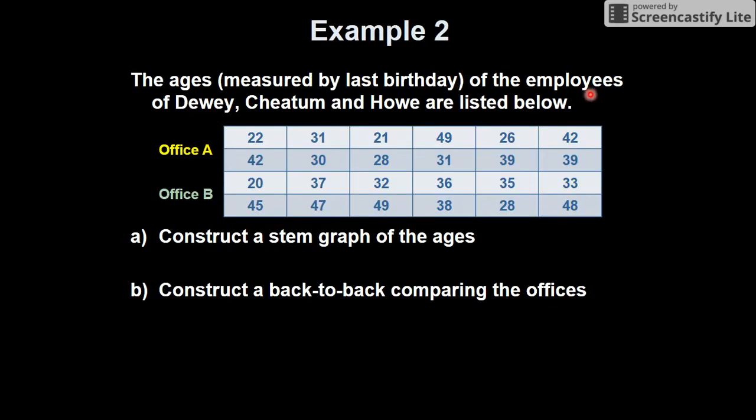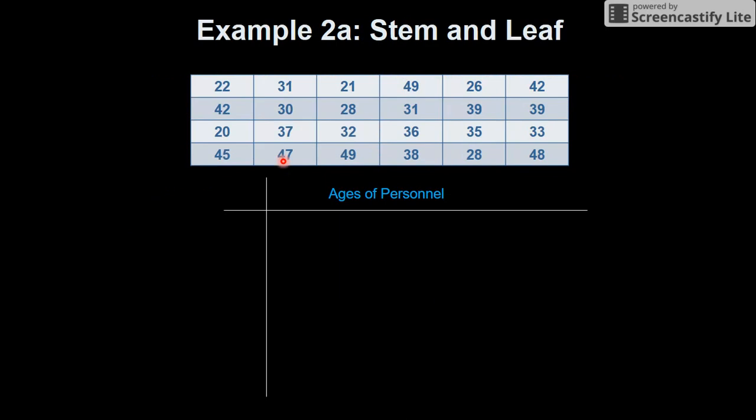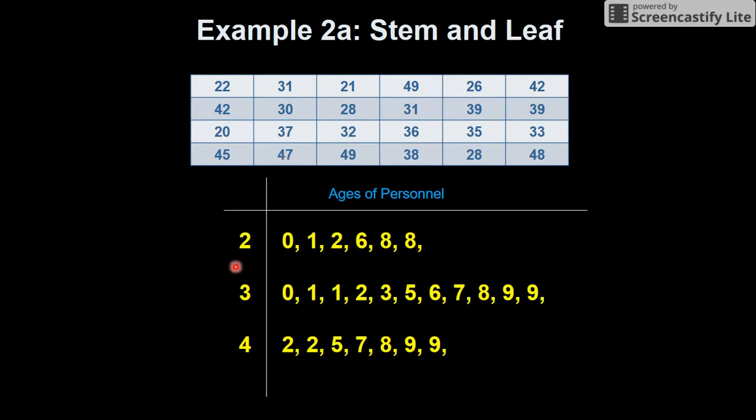The ages measured by the last birthday employees. So here, again, this will be a back to back one. It says construct a stem graph of all the ages. And then construct a back to back comparing the offices. You've got office A and office B, your ages of your personnel. So you've got two. And here, you can see they've put it into order.